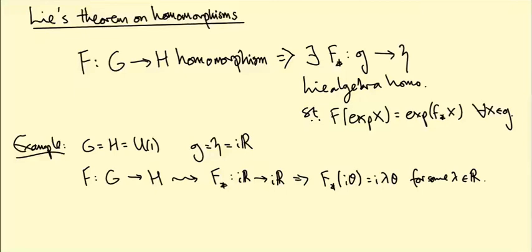Is that only algebra homomorphism? Well it's a linear map, but does it preserve the Lie brackets? F star of [i theta one, i theta two], is that equal to [F star i theta one, F star i theta two]?